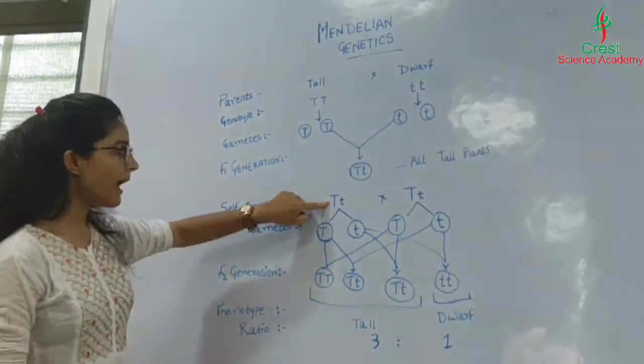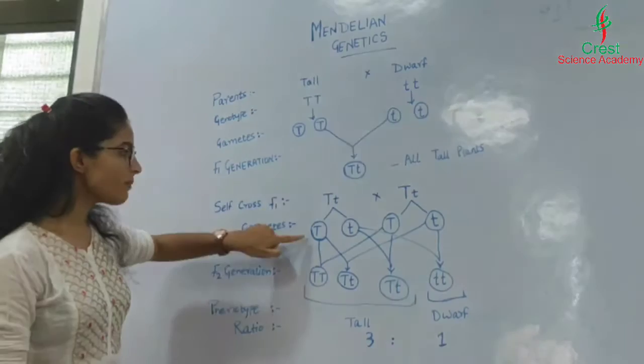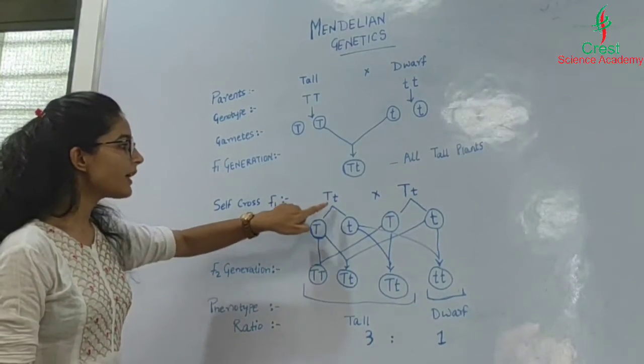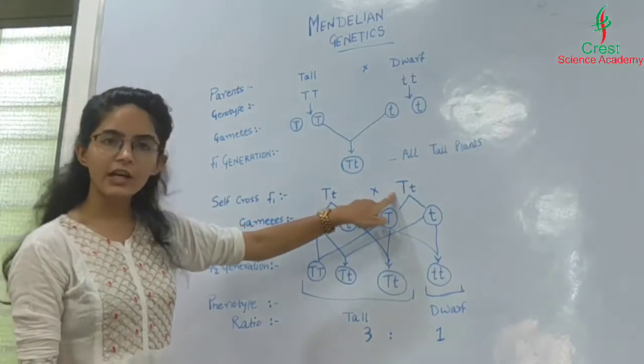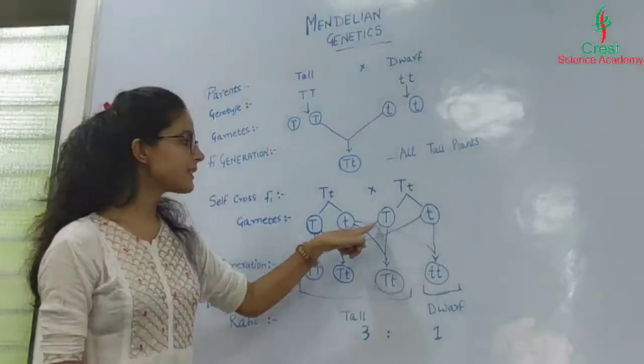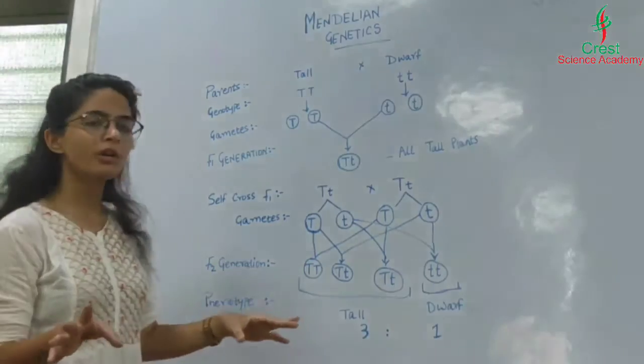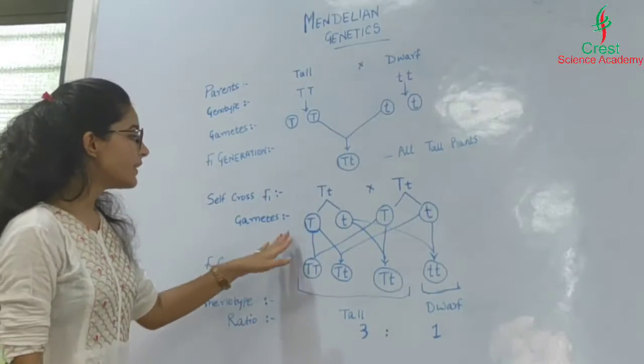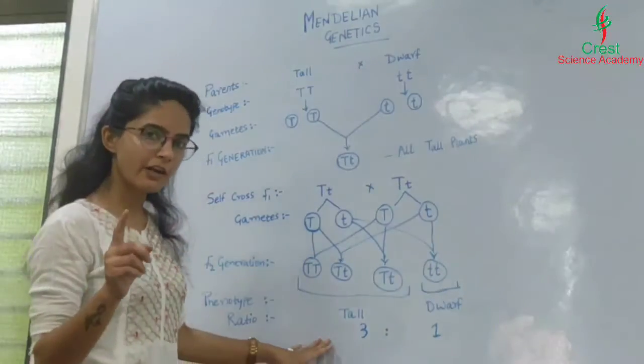The genotype of the plant was capital T and small t, but during gamete formation capital T and small t get separated. The same happens with the other plant. Capital T and small t gametes get separated—they segregate and are accommodated in different gametes. This mixture of gametes helped him get three tall plants and one dwarf plant.